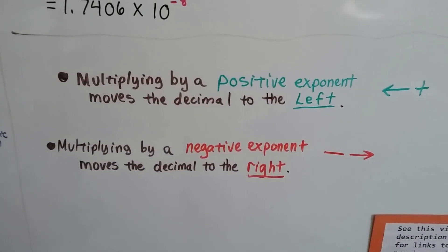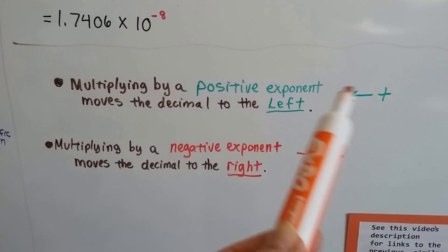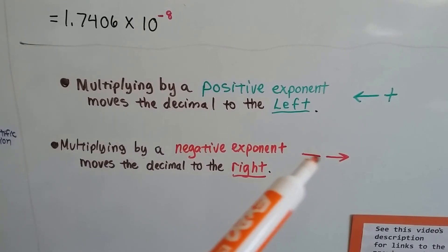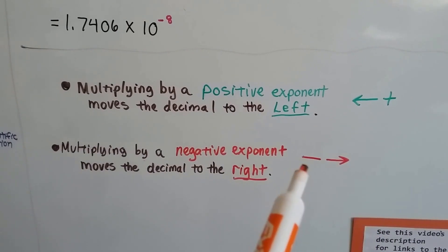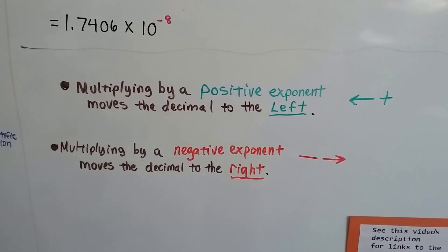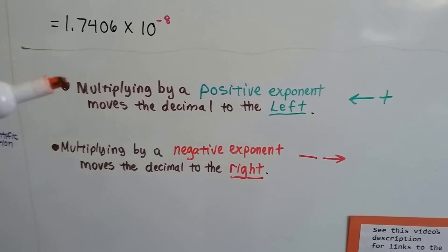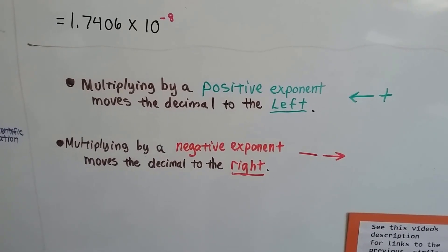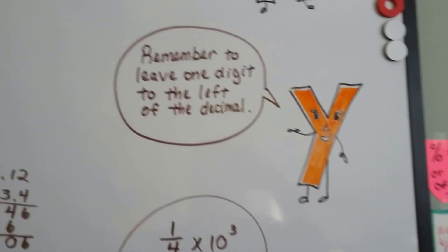Multiplying by a positive exponent moves the decimal to the left — think plus sign, left arrow. Multiplying by a negative exponent moves the decimal to the right — think minus sign, right arrow. If you can remember the green plus sign with arrow to the left and the red minus sign with arrow to the right, that might help. When converting to scientific notation, remember to leave one digit to the left of the decimal.